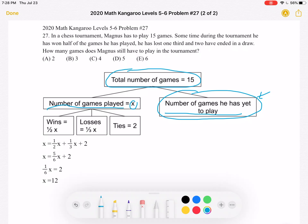We know that out of the games he has played, that number X is going to be the sum of the number of wins he has, the number of losses, and the number of ties.